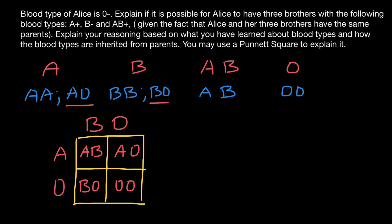Now let's return to our problem. Alice belongs to blood group O, and we have that genotype here. One of her brothers belongs to blood group A — we have that here, with genotype A-O making blood group A. Another brother belongs to blood group B — we have that here, with genotype B-O making blood group B. And the third brother belongs to blood group AB, and we have that genotype here too. So all four children would have different blood groups.